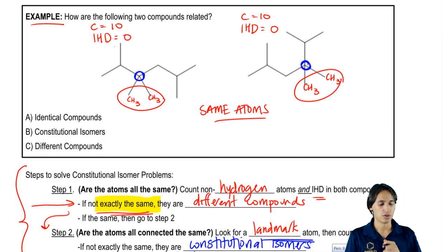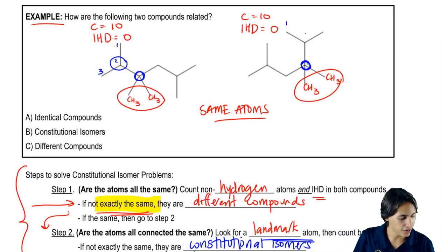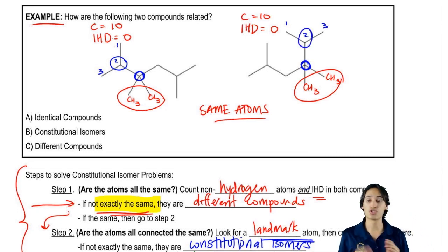So then what else? Well, we also have a carbon chain that has three carbons, one, two, three, and it's connected in the middle. Now let's look on the other side to see if we can find the same thing. Actually, yes, we have one that has three carbons and it's connected in the middle. So so far, this is looking like it's the same compound.